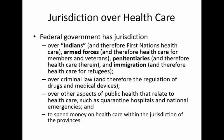The federal government also has jurisdiction over other aspects of public health which relate to health care, such as quarantine hospitals at Canada's borders and points of entry, and jurisdiction to deal with national emergencies — emergencies that are beyond the scope of a particular province and that may have implications for health care or require a response from the health care system.